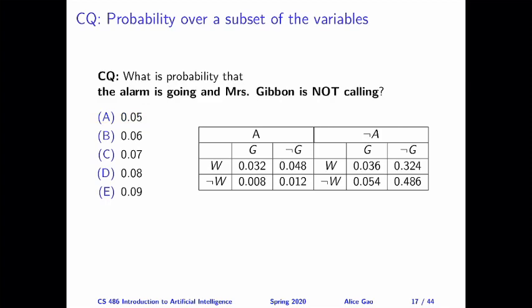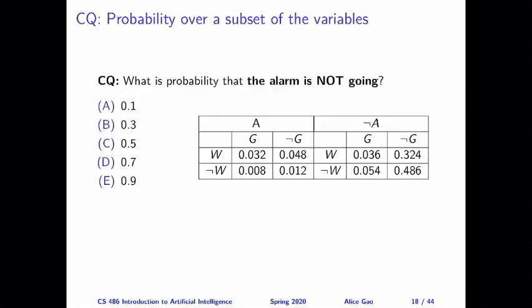Question number two: we want to calculate the probability that the alarm is going and Mrs. Gibbon is not calling — P(A, ¬G). The correct answer is 0.06. Question number three: we want to calculate the probability that the alarm is not going — the prior or unconditional probability that A is false — and the correct answer is 0.9. From this we can note that in our model, the alarm is unlikely to go off; it is a rare event.